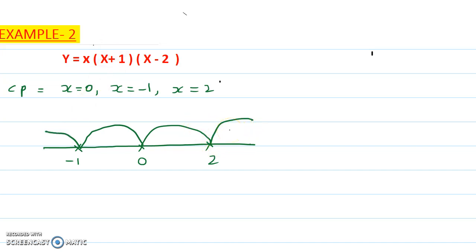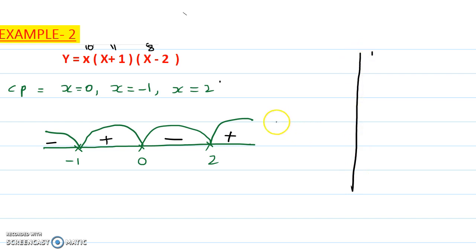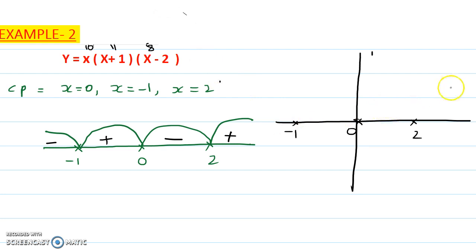Take any number greater than 2 — I'll take 10. Putting x=10: 10+1=11 and 10-2=8. Multiplying gives positive. Following blindly gives alternating signs: positive, negative, positive, negative. After 2 it is positive, so the graph starts from the top. Between 0 and 2 it is negative. Between 0 and -1 it is positive. After -1 it is negative, going down.